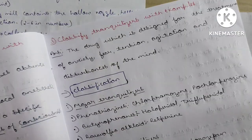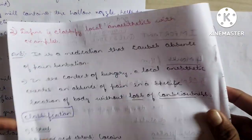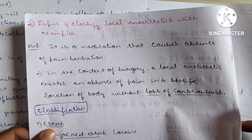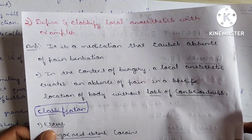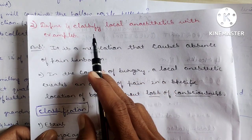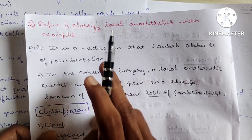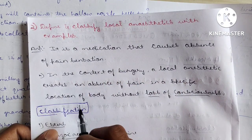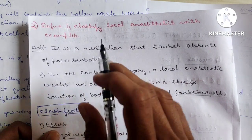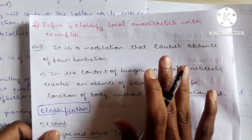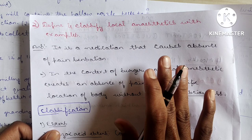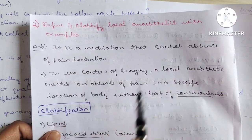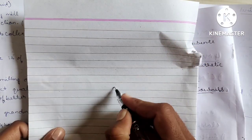Question 2: Define and classify local anesthetics with examples. Local anesthetics are medications that cause absence of pain sensation. Even if only asked to classify, write the definition. They help relieve pain in a specific area — the medication makes that body part painless.